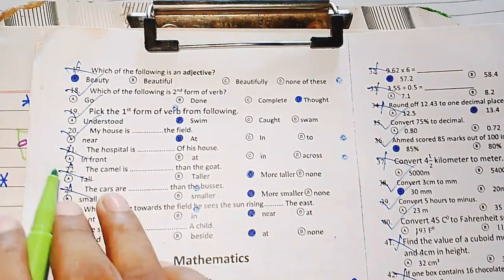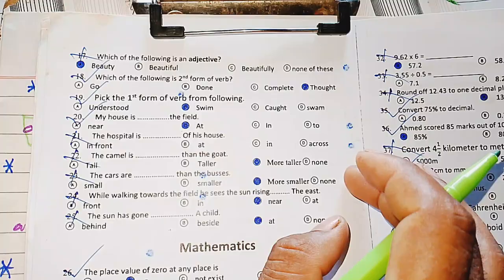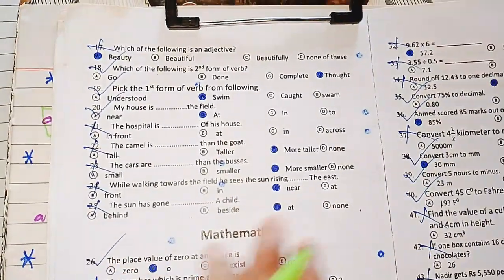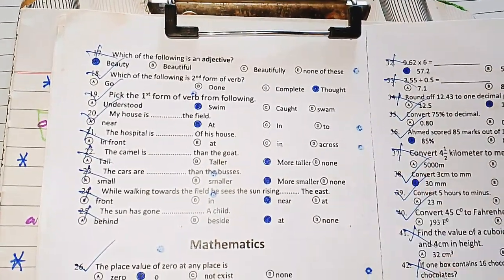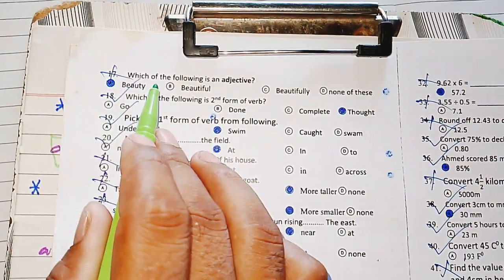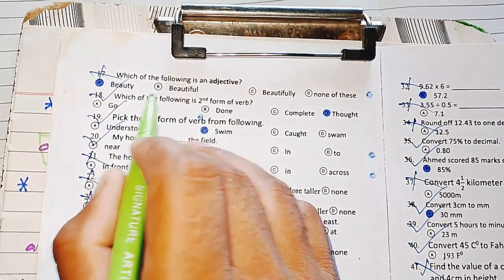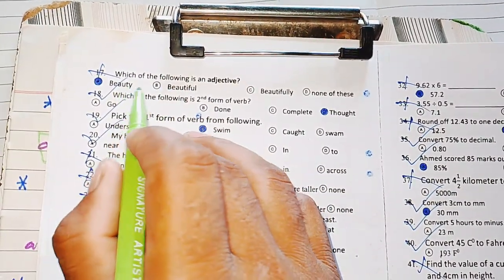Thank you. Which one of the following is an adjective? The word beautiful is an adjective; beauty is a noun.